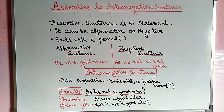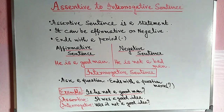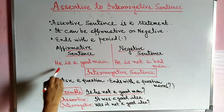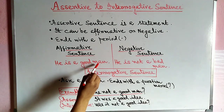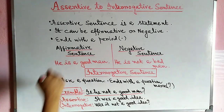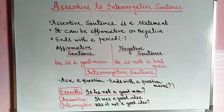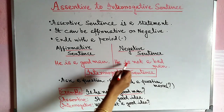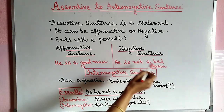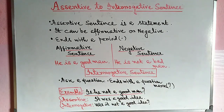For example: 'He is a good man' — that is affirmative. 'He is not a bad man' — that is negative. So we have affirmative to negative conversion.